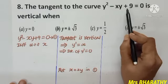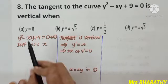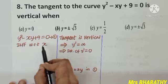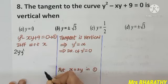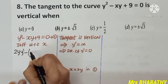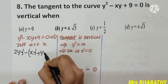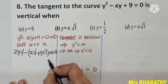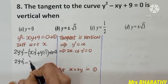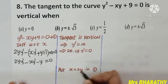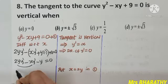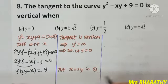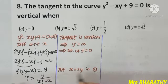Question number 8: the tangent to the curve y² − xy + 9 = 0 is vertical. When the tangent is vertical, y′ = ∞. Differentiating with respect to x: 2y · y′ − (x · y′ + y · 1) + 0 = 0. Simplifying: 2y · y′ − x · y′ − y = 0. Taking y′ as common: y′(2y − x) = y, so y′ = y/(2y − x).